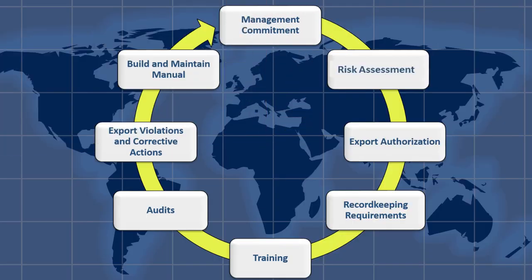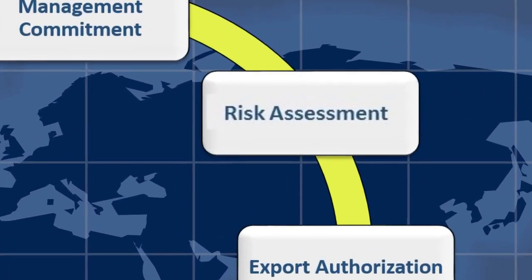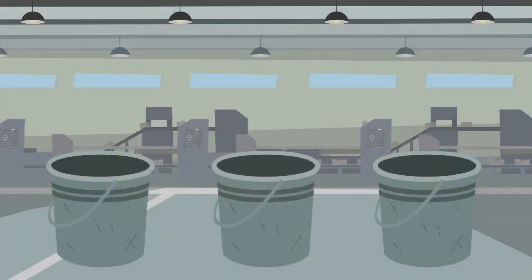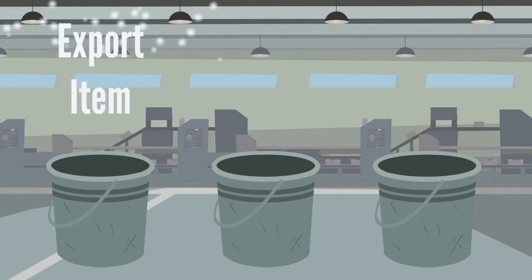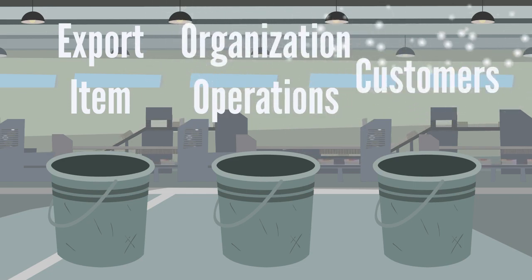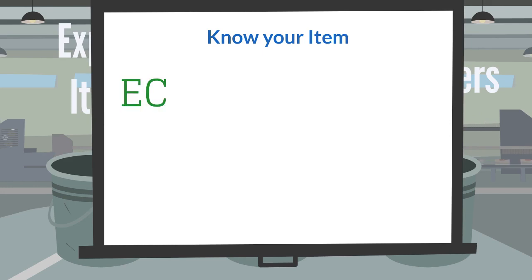The second element is Risk Assessment. The goal of this element is to identify preventable risk and build safeguards to minimize vulnerabilities. The circular chart focuses on Risk Assessment. Risk Assessment, or risk in exporting, primarily comes from three areas: the exported item, your company's operations, and your potential customers. You need to know your item, and you need to know your ECCN — Export Control Classification Number.